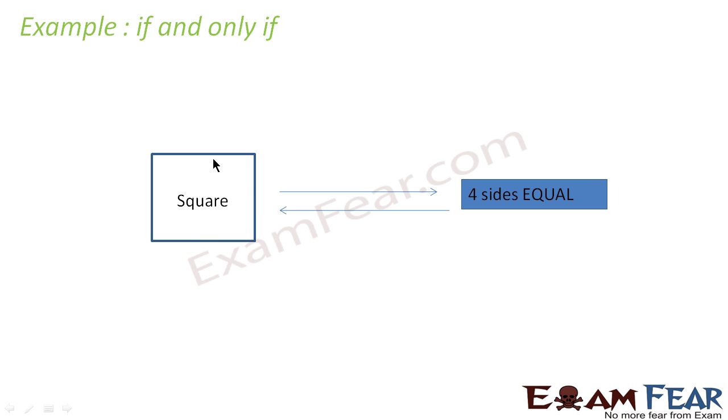For example, if you're talking about a square, you know that four sides are equal. And if you're saying four sides are equal, that means it is a square, right?